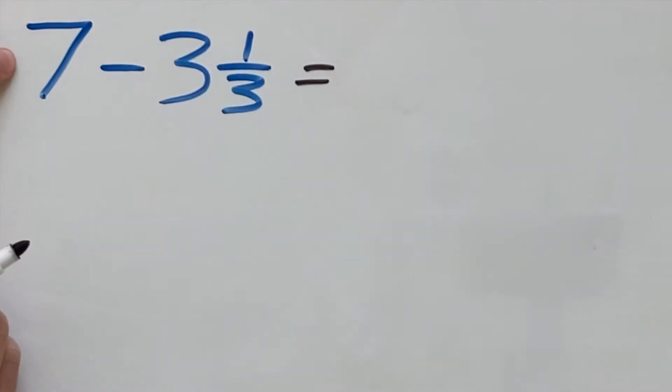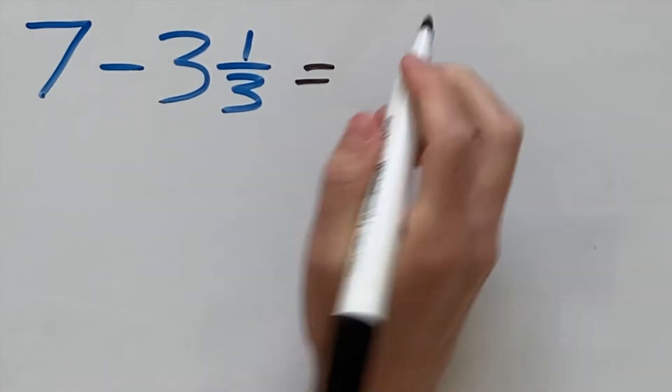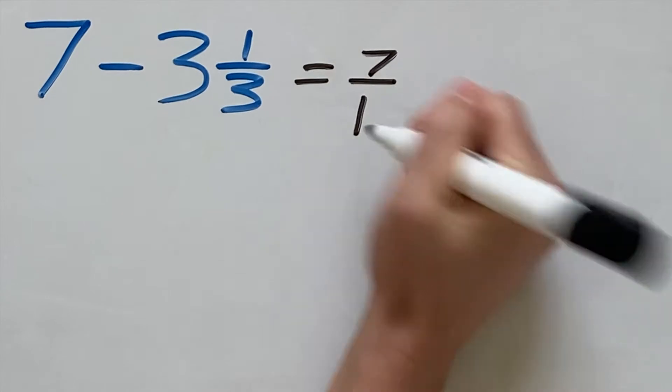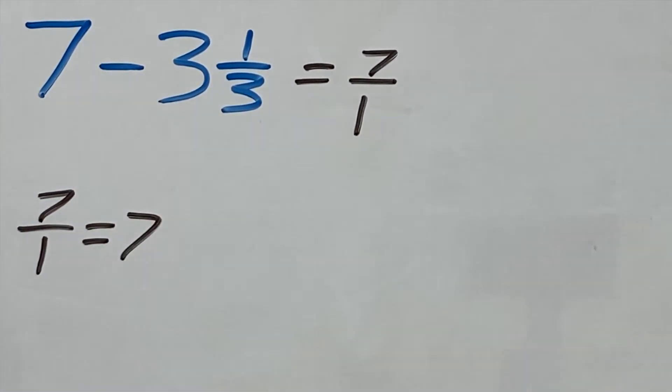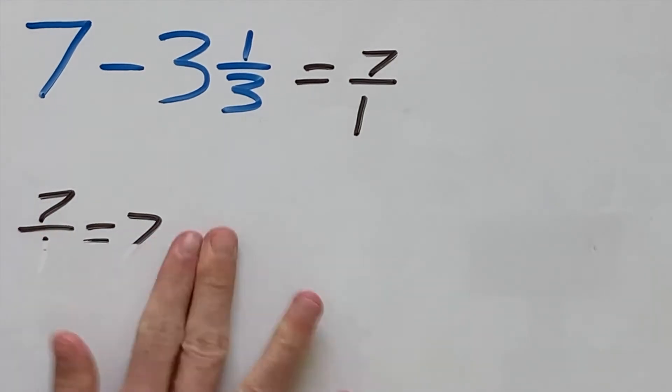We can rewrite 7 as a fraction by putting it as 7 over 1. Because 7 over 1 is still 7, we are just rewriting it as a fraction.